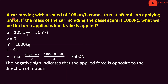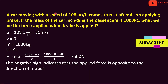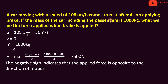A car moving with the speed of 108 km per hour comes to rest after 4 seconds on applying the brake. The mass of the car including the passengers is 1000 kg. What will be the force applied when the brake is applied? The initial velocity u is 108 km per hour. We convert this to metres per second by multiplying by 5 divided by 18, which gives 30 m per second.